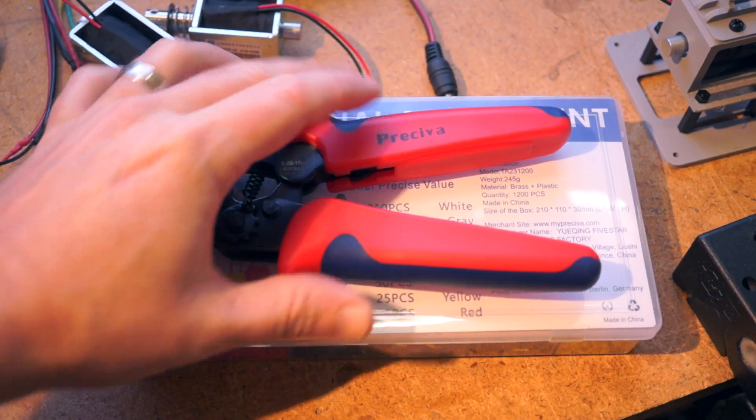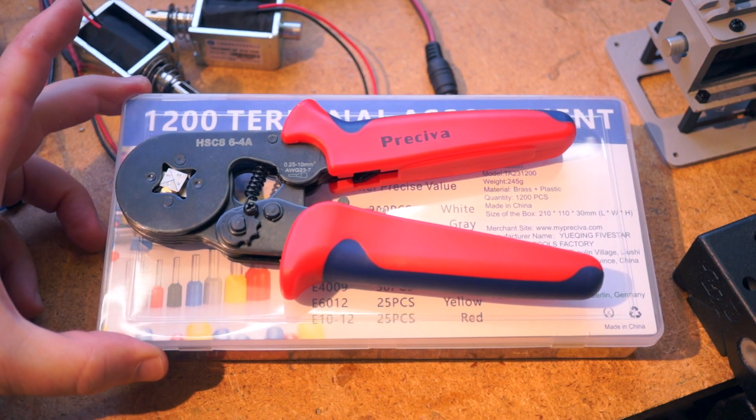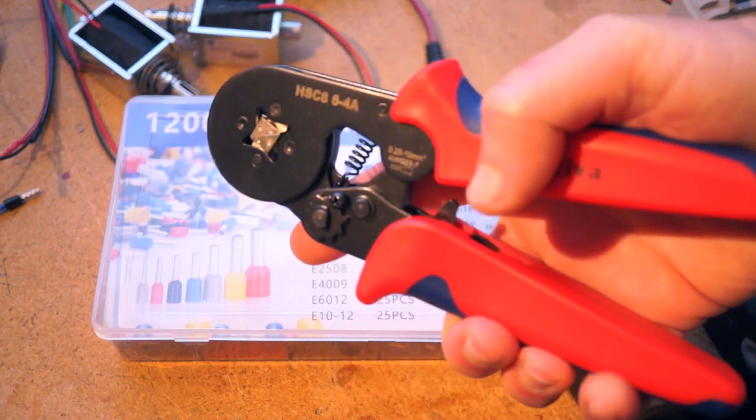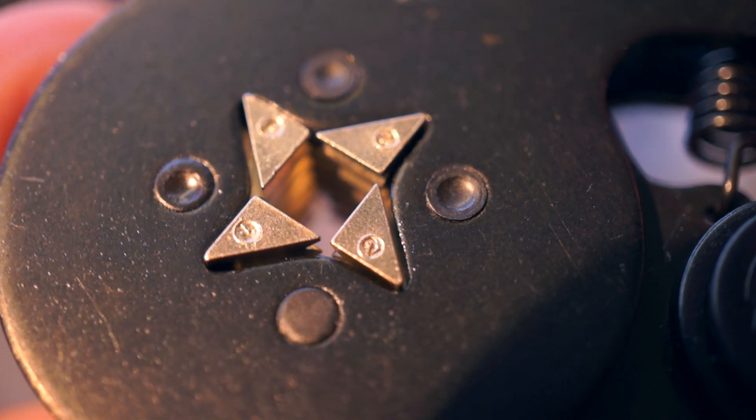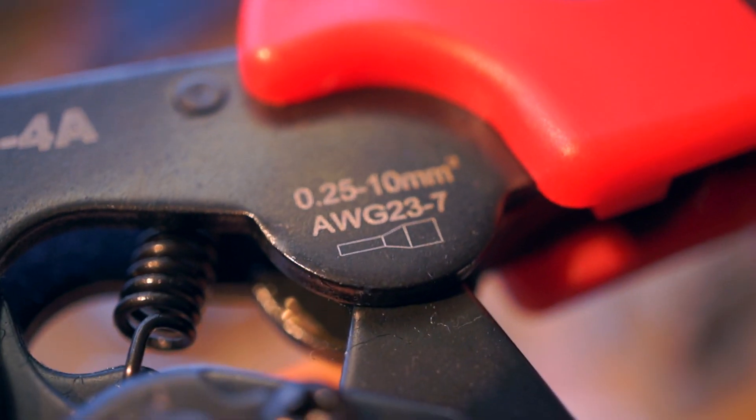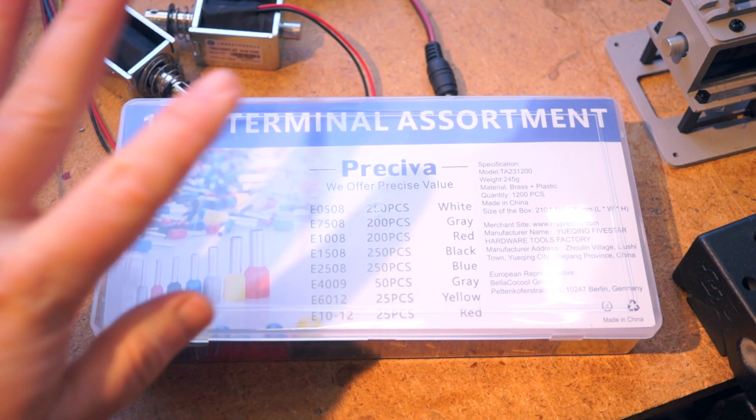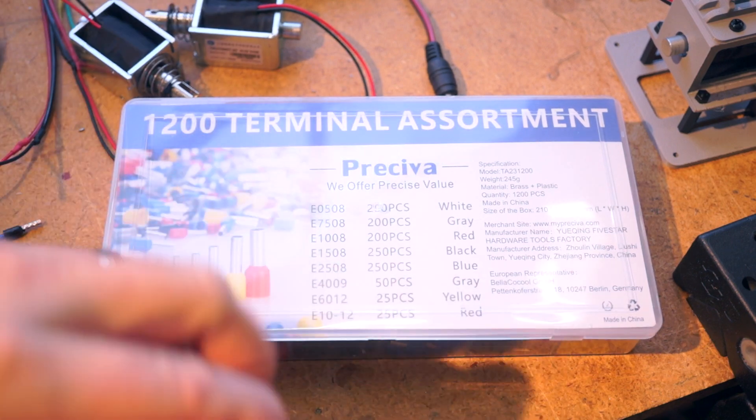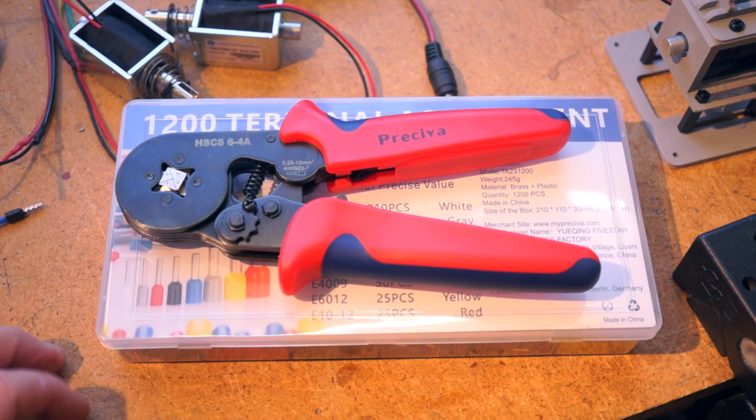Ideally, you should be attaching them with a ferrule crimper like this one that applies pressure from all four sides and imprints that bumpy texture. These crimpers will also indicate the range of wire gauges that they're designed for. I purchased this kit on Amazon for under $30 that includes both the ferrules and the crimper.